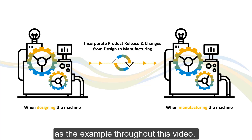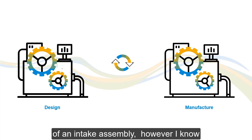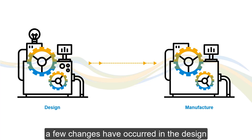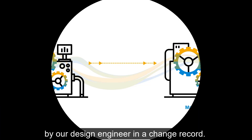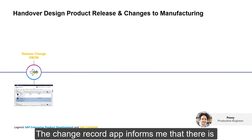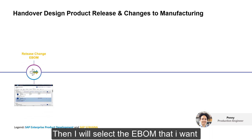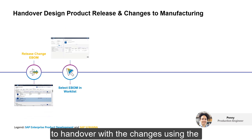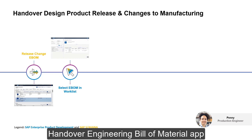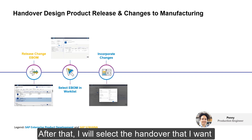I already transformed an eBOM to mBOM of an intake assembly; however, I know a few changes have occurred in the design by our design engineer. The change record app informs me that there is a new eBOM released by our design engineer. I will then select the eBOM that I want to hand over with the changes using the Handover Engineering Bills of Material app.